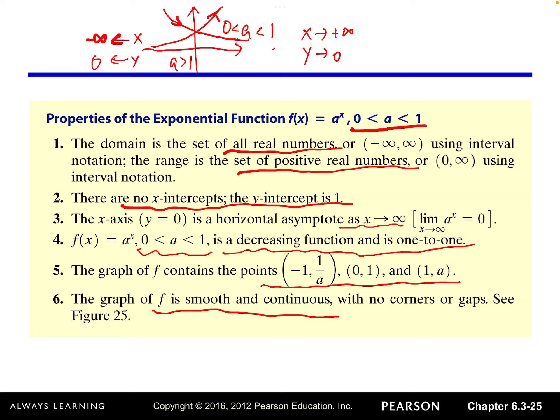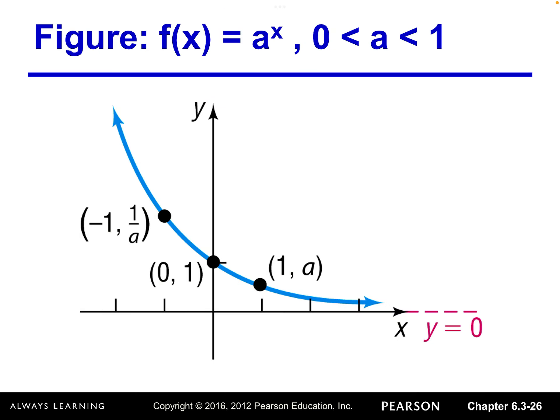To summarize, properties 1, 2, 5, and 6 are the same whether the growth factor is greater than 1 or between 0 and 1. The only differences are properties 3 and 4, which are kind of opposite. This is the general graph of A raised to the x power when A is a number between 0 and 1.